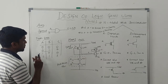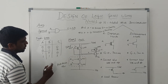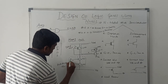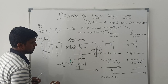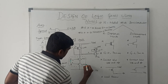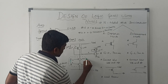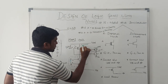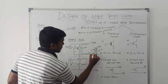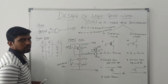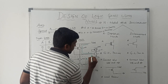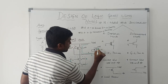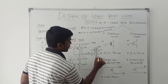Now I check another input combination: A equals 0, B equals 1. In this case, transistor T3 turns on and transistor T2 turns off. VDD is directly connected to the input of T4. Since the T4 input is 1, this transistor turns on, and VDD is directly connected to VSS through the pull-down path.